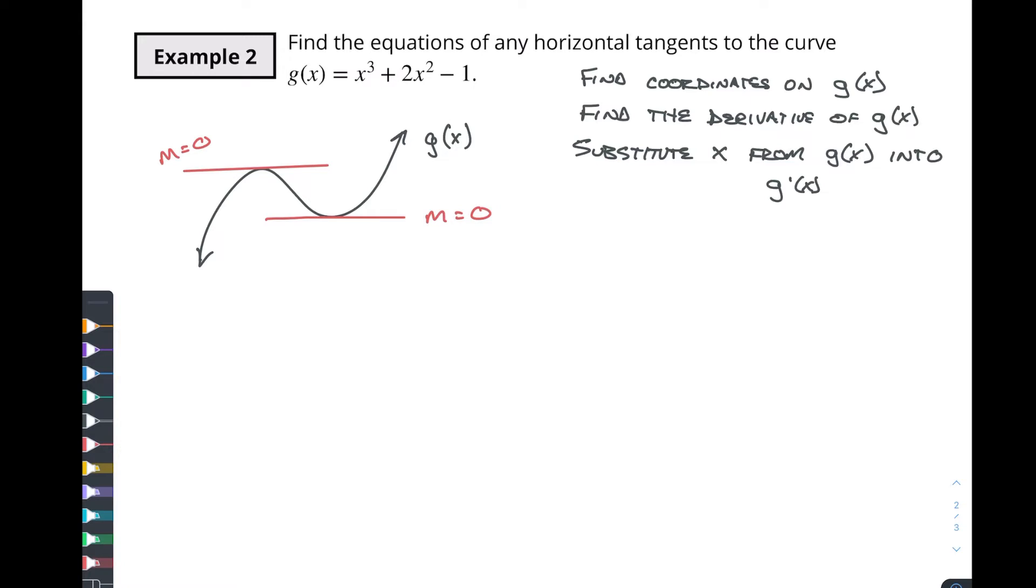And we found in the previous video as well that g prime of x was equal to 3x squared plus 4x. So what we're trying to do is we're actually trying to work backwards, find the coordinates on g of x when this is happening.